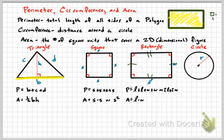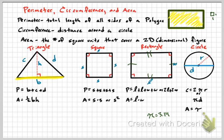For circles, we use the radius — the distance from the center to the edge — and the constant pi, approximated as 3.14. The circumference is 2πr, or equivalently π times the diameter, where the diameter is twice the radius. The area of a circle is πr².